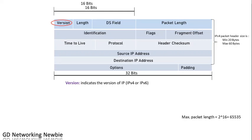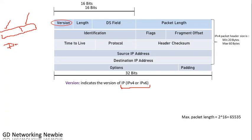We also have the version field. The version field is 4 bits in length and indicates which version of IP is being used — IPv4 or IPv6. At any particular instant, only one version of IP is carried by a packet. For instance, in a packet with a header and data, the version field tells us whether the data is being carried using IPv4 or IPv6.